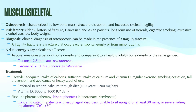A T-score of negative 1 to negative 2.5 indicates osteopenia, another important number for your boards. Osteopenia, also known as reduced bone mass, is a less severe form than osteoporosis. However, it's important to know that if a patient has osteopenia based on their T-score and has a risk for fracture, they are also indicated for treatment.